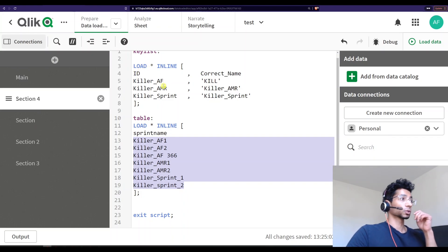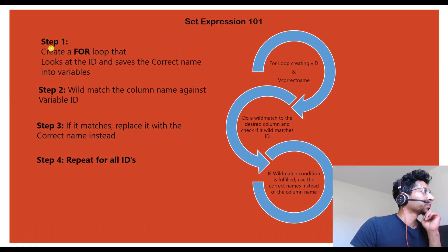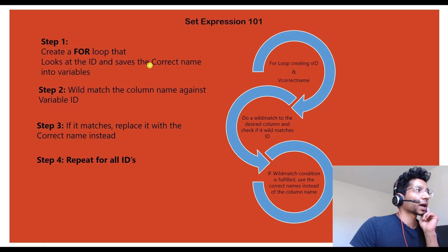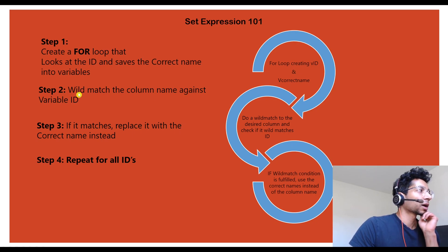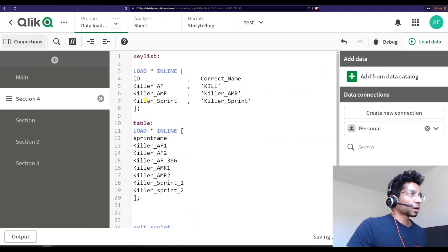The way we're going to do it is by using a for loop. In step one, we create a for loop that looks at the ID and saves the correct name into two variables. Then we load our table that has the column we want to clean, do a wildmatch, and if any column name wildmatches the ID we replace it with the correct name — repeating that for every single ID in our key list.